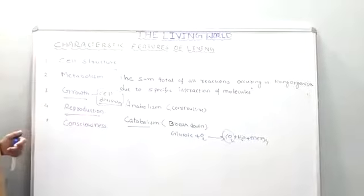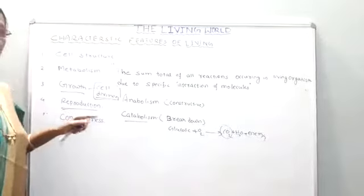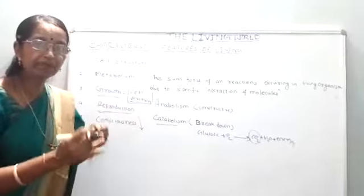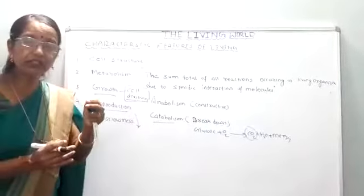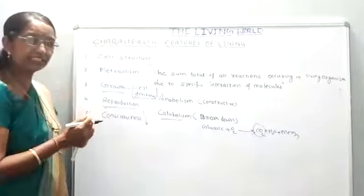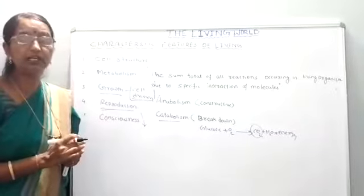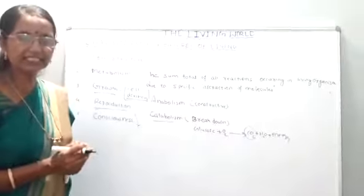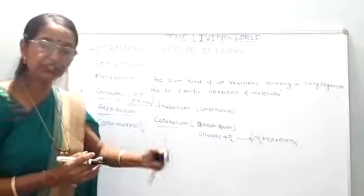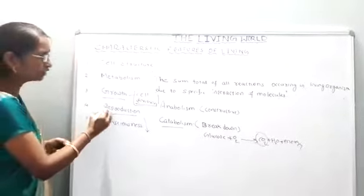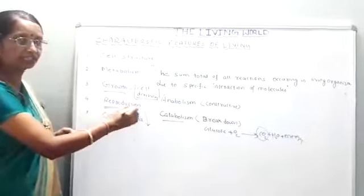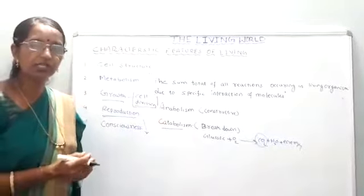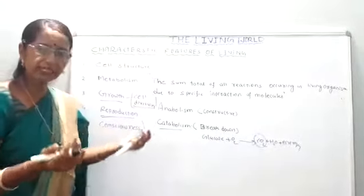Coming to reproduction - every living organism reproduces. Reproduction is a mature organism capable of giving birth to its young ones. Reproduction is necessary because if it does not take place, the continuity of life does not exist. To continue its race and generation, reproduction is necessary. It is also one of the defining characteristic features of a living organism. We study different kinds of sexual reproduction in lower and higher organisms.